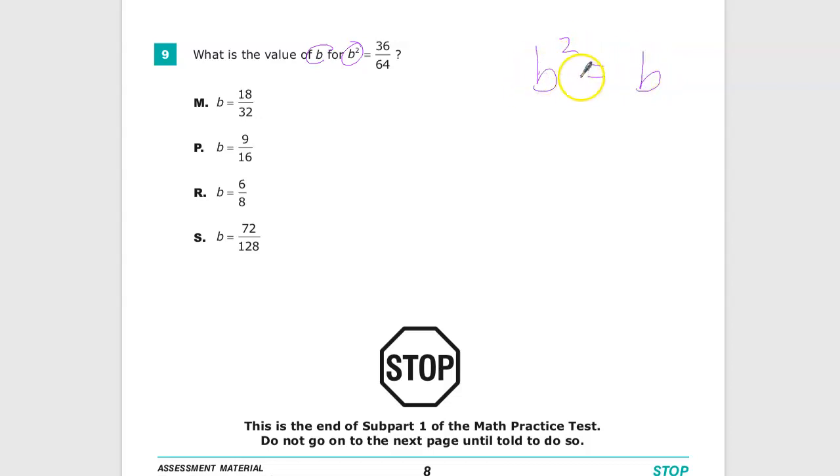To get from here to here, what do I need to do? Well, I need to do the opposite operation of square, which is square root. So that means I need to take whatever this is and take the square root of both.